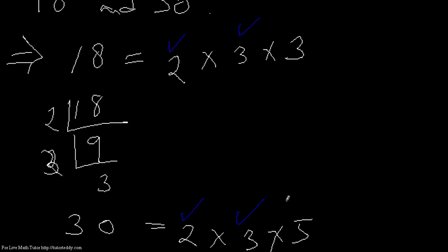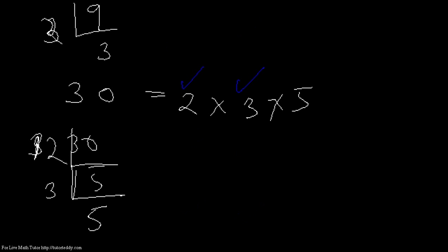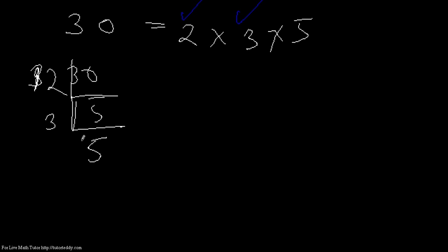And that is the highest common factor. Therefore, I can write: HCF of 18 and 30 is 2 × 3 = 6.